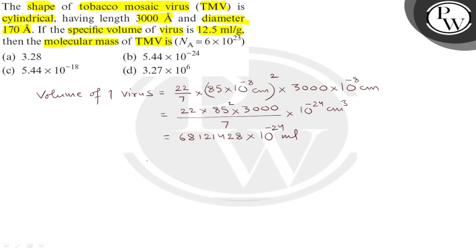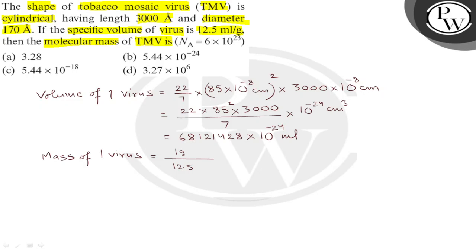So what should be the mass of one virus? Using the specific volume — 1 gram per 12.5 milliliters — we multiply by the volume of one virus, which is 6.81428 into 10 raise to minus 24 milliliters.